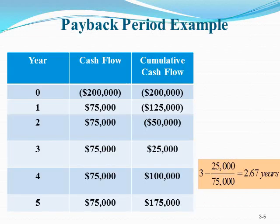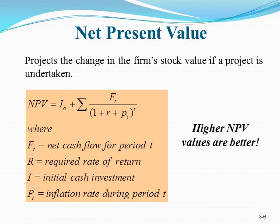Here is the complete solution. Moving from year zero to year five, the initial investment of $200,000 is negative, and the cash flows of $75,000 per year are positive. The cumulative cash flow starts at minus $200,000, then minus $125,000, minus $50,000. Between year two and year three we return on investment and start making profit. By year four the cumulative is $100,000, and by year five it is $175,000.